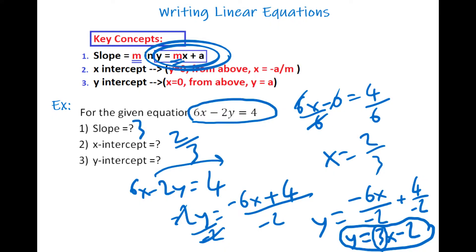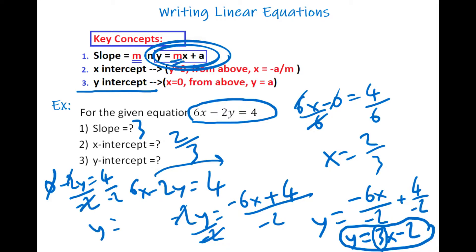And y-intercept means when x is equal to 0. In our case, just put 0 instead of x. So it's going to be 0 minus 2y equals 4. Divide both sides by negative 2, and y is negative 2. So y-intercept is negative 2. We need to know these concepts to write clear linear equations.